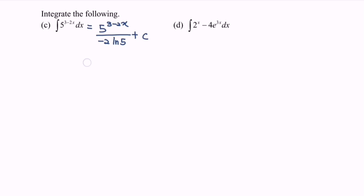Rewrite the situation, and we will have negative 5 to the power of 3 minus 2x over 2, ln 5 plus c.